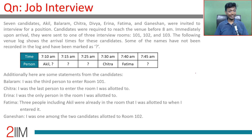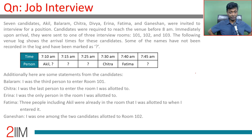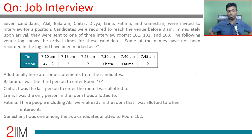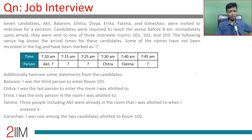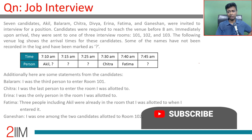This is a set from CAT 2018 DILR. If you have not done this set, hit pause straight away and try it. You can find the description all over the place — try this set before watching the video, otherwise it's just a pointless exercise. Job interview: seven candidates — Akil, Balram, Chitra, Divya, Erina, Fatima, and Ganeshan.